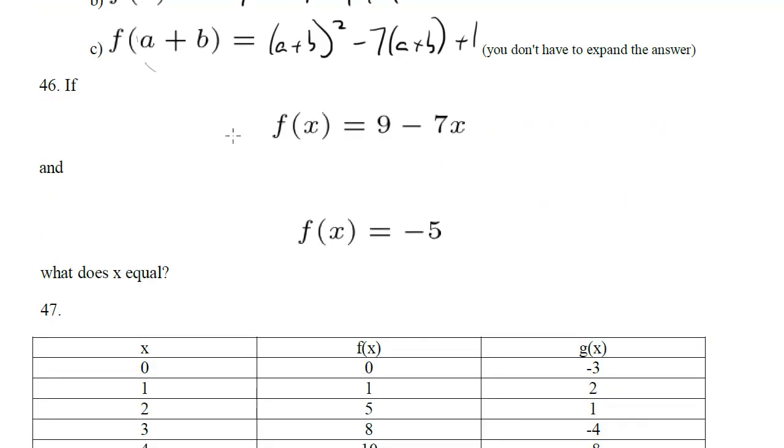Problem 46. If this function equals this, what is x equal? Well remember here you don't want to plug negative 5 in for x because we're told that the function itself equals negative 5. So instead we're going to set this equal to negative 5 and solve. So we get negative 7x equals negative 14 or x is 2, which is your answer.